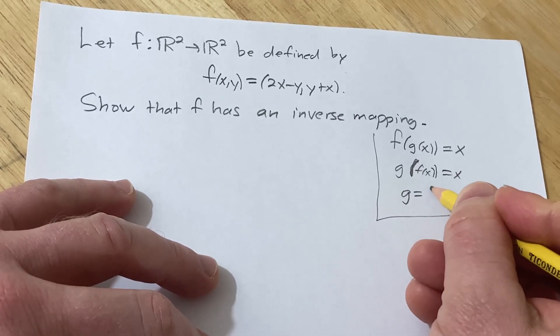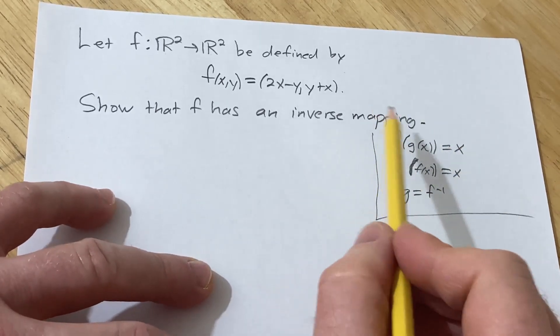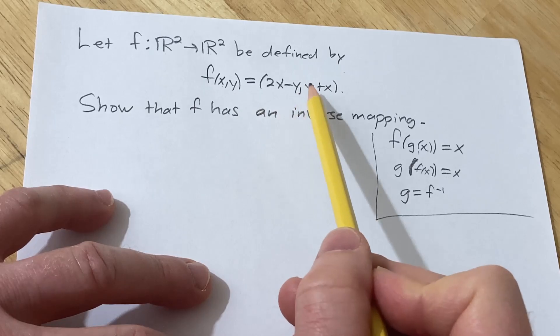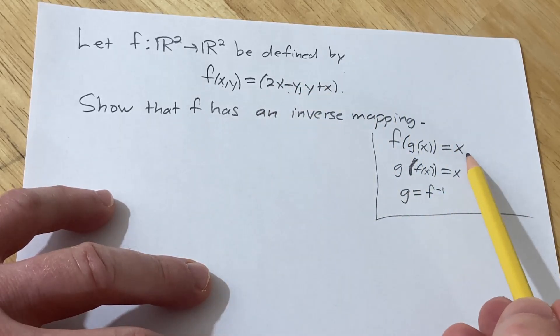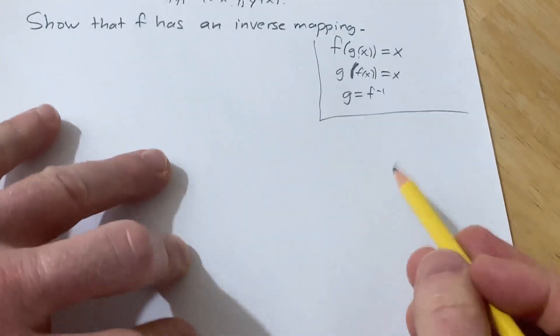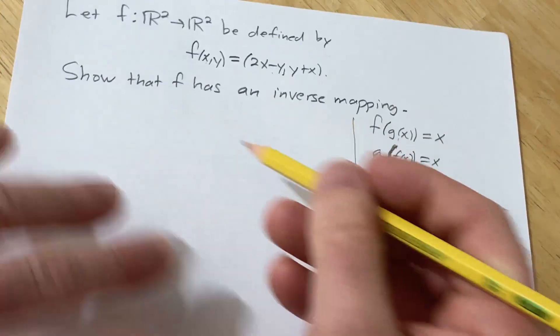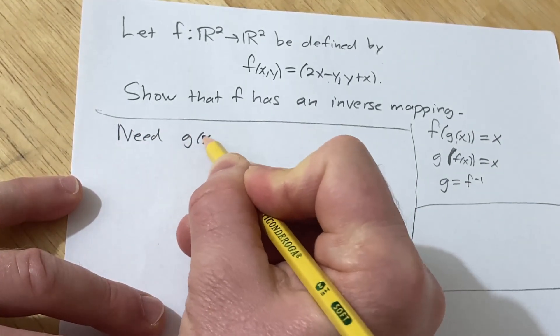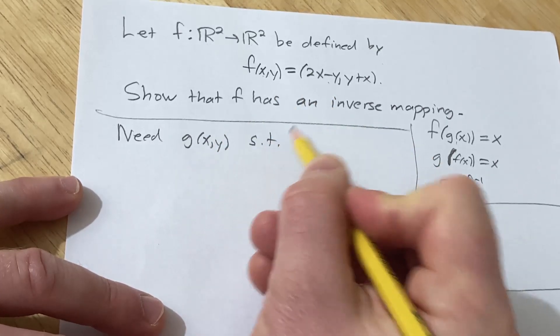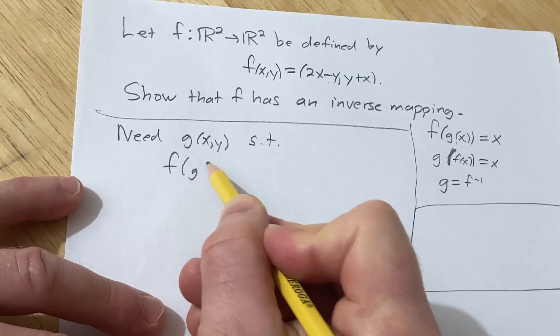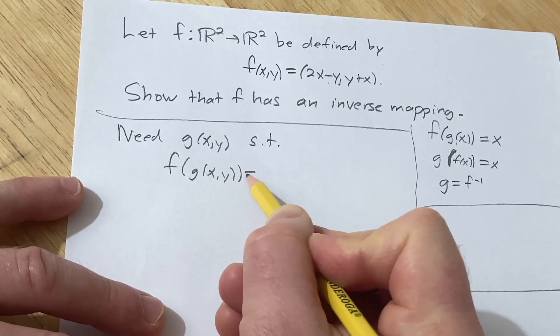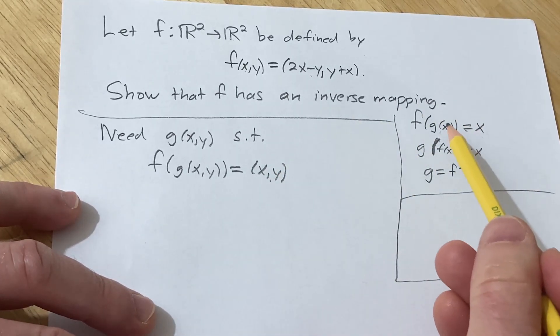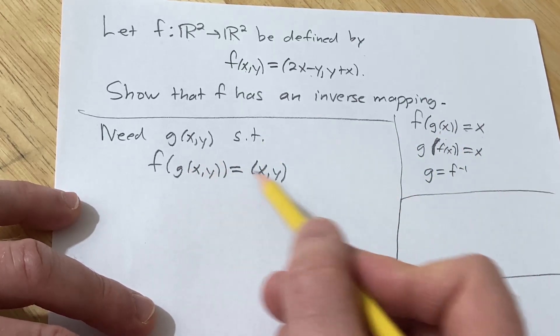So basically, we have to find a function such that when we take the composition of that function with this function, we get the ordered pair (x,y) because this is in two variables. So instead of just x, it has to be (x,y). So more precisely in this problem, let me just do it here. Let's do the scratch work. What do we need? We need g of (x,y) such that whenever you look at f of g of (x,y), you should get back (x,y). Notice it's the same as this one, except it's (x,y) instead of x. This is the single variable case, and this is the multivariable case.